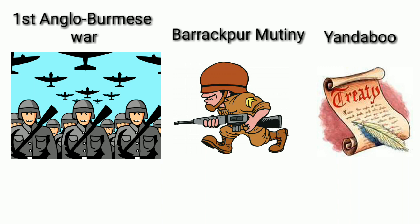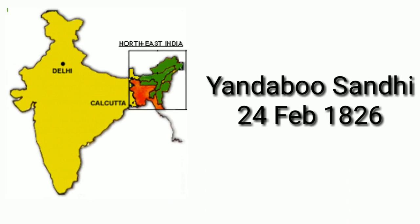After the First Anglo-Burmese War, the Treaty of Yandabo was signed between the British and Burma on 24 February 1826, and Assam came under British control.